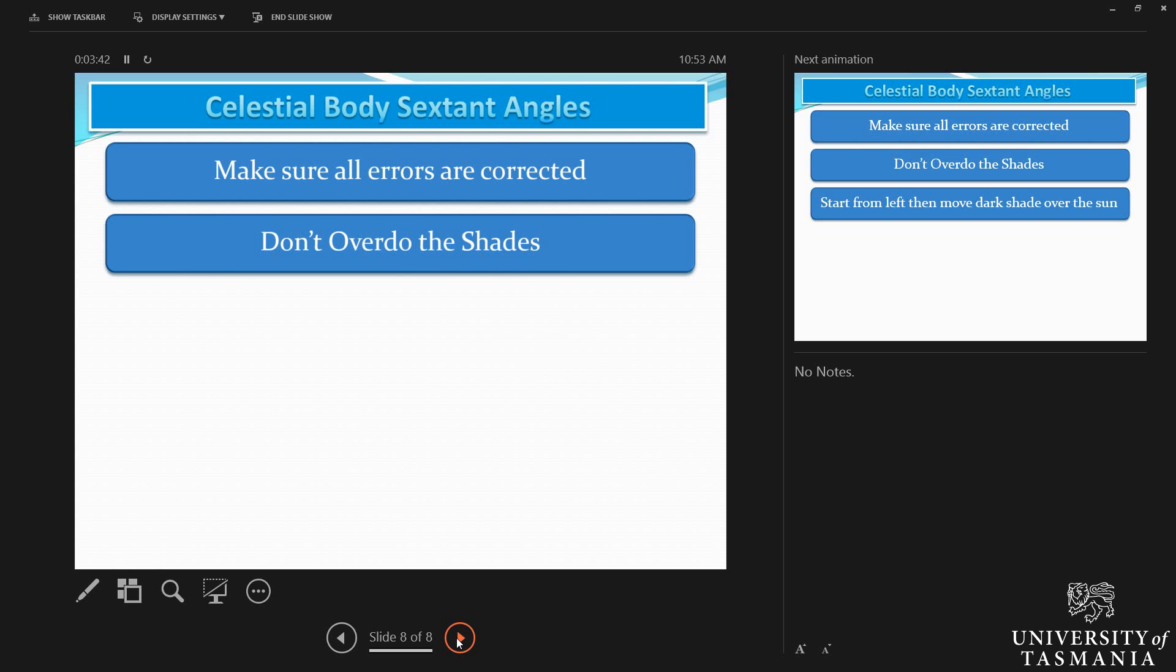Don't overdo the shades on the sextant. When you are taking a sextant sight, especially for a sun, the sun could be bright and you need to use shades, but don't overdo the shades. The more shades you introduce, the more chances of error creeping into your readings.